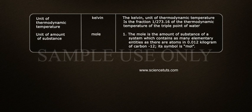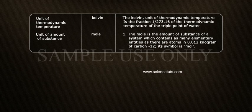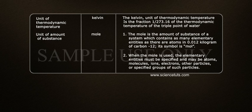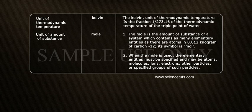Unit of Amount of Substance: Mole. 1. The mole is the amount of substance of a system which contains as many elementary entities as there are atoms in 0.012 kilograms of carbon. Its symbol is mol. 2. When the mole is used, the elementary entities must be specified and may be atoms, molecules, ions, electrons, other particles, or specified groups of such particles.